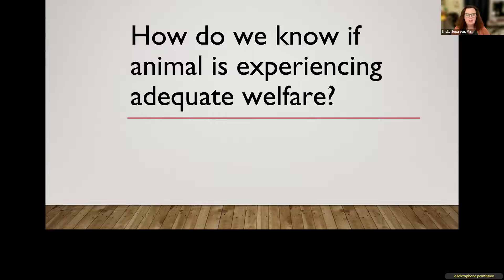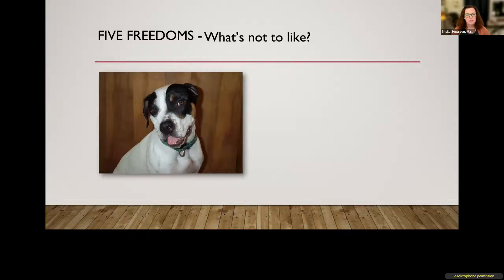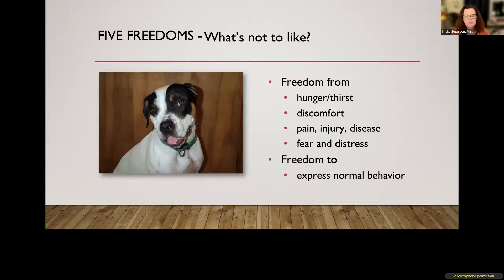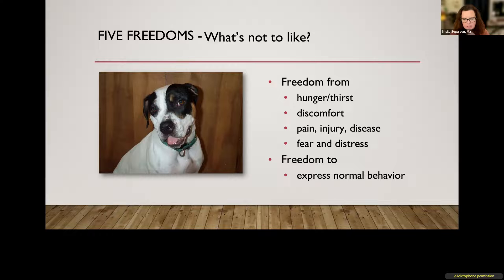So let's start with a question: How do we know if an animal is experiencing adequate welfare? Historically, we use the Five Freedoms to assess animal welfare in the shelter environment. The Five Freedoms were developed in 1979, originally for farm animals, and the animal welfare movement took on these five freedoms, which we now use for assessing welfare in animals. And the Five Freedoms are great.